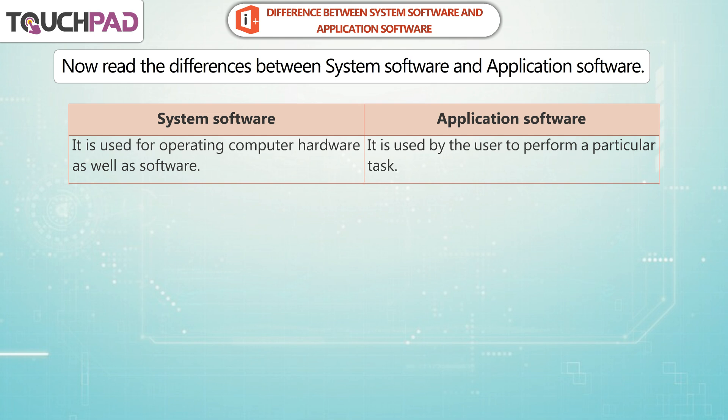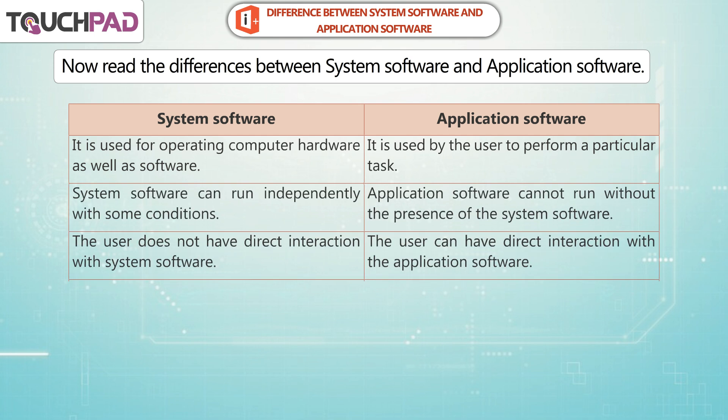System Software is used for operating computer hardware as well as software. Application Software is used by the user to perform a particular task. System Software can run independently with some conditions. Application Software cannot run without the presence of the System Software.